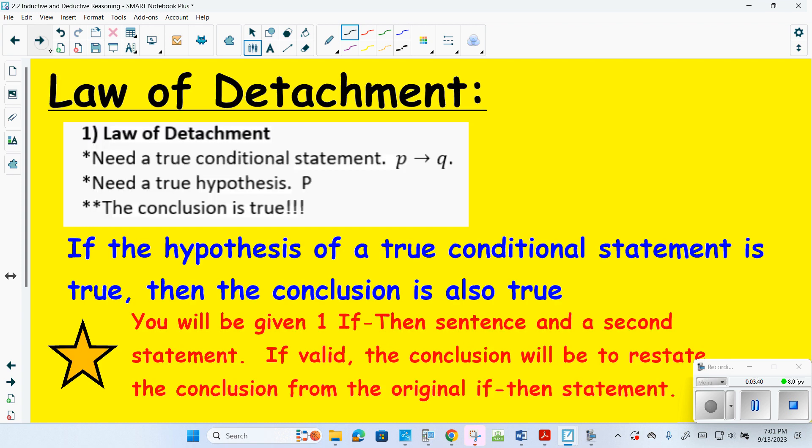Let's talk about the laws. Law of detachment. The law of detachment needs a true conditional statement. Then you need the hypothesis, the P to be Q, P to be true, and then the conclusion would be true. So if a hypothesis of a true conditional statement is true, then the conclusion is also true. You will be given an if-then statement and the second statement. If it's valid, the conclusion will restate the conclusion from the original if-then.